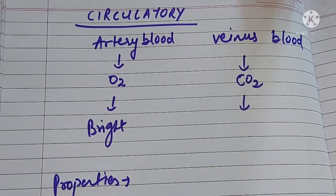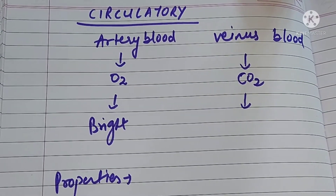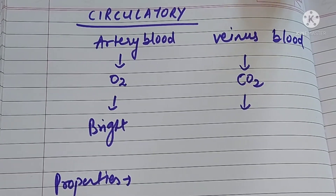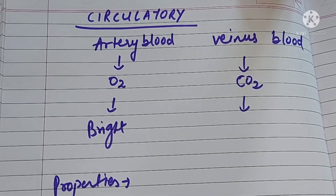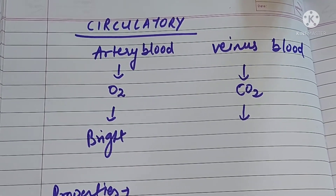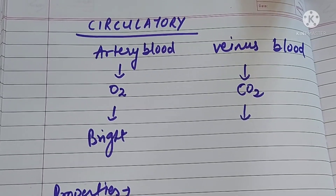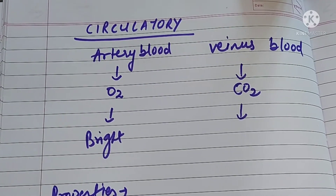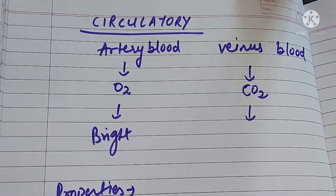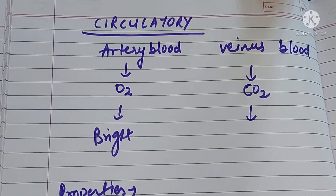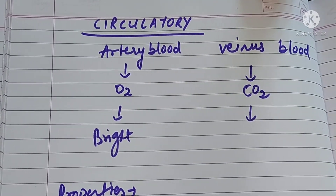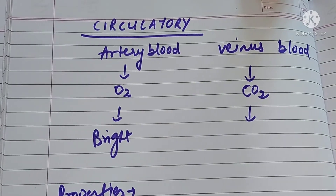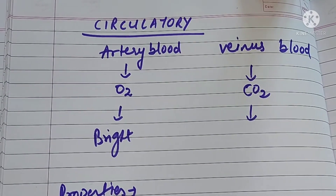Come to the volume of blood. If you see the volume of blood, a normal human body contains 5 to 6 liters of blood. The next property is taste — the taste of blood is slightly salty. Now, come to the next point, that is the pH. The pH of blood is slightly alkaline, meaning the pH is above 7. The pH of blood is 7.3 to 7.45, so it is slightly alkaline.